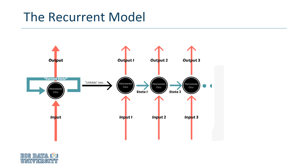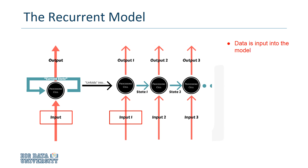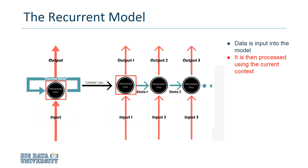Let's take a closer look at how this works. Input data first flows into the model's single layer. The data is processed in the same way as a traditional net, but the net also receives the current state, or the context, along with the input.